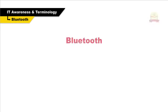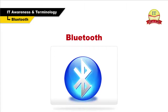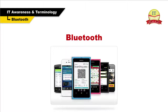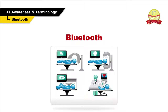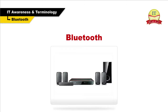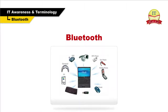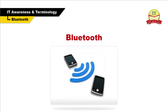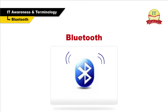Bluetooth can be seen in billions of devices ranging from mobile phones and computers to medical devices and home entertainment products. Bluetooth is used to transfer files between a PC and a smartphone or move them between two mobile phones without physically needing to attach them with wires. Bluetooth was invented by Ericsson in 1994 as a way of transferring information over short distances without the need for wires.